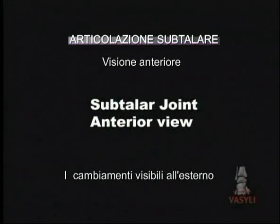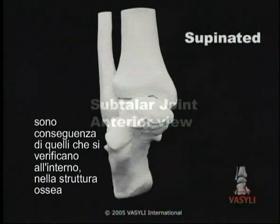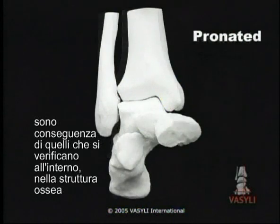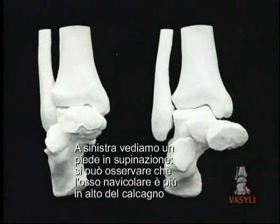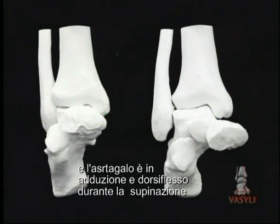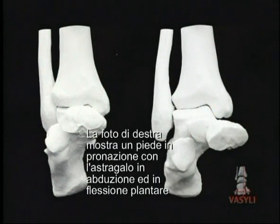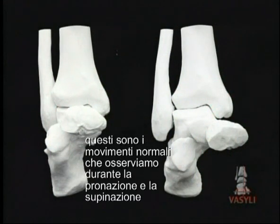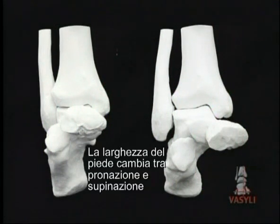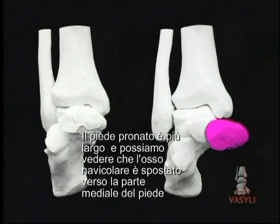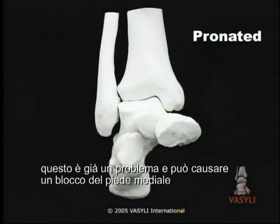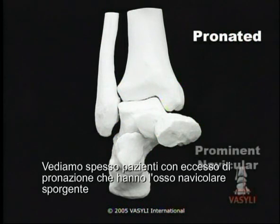Internal changes. The changes that are visible externally occur as a result of changes to the internal bony architecture. On the left is a supinated foot — the navicular on the medial aspect of the foot is higher than the calcaneus, and the talus is adducting and dorsiflexing with supination. The photo on the right shows a pronated foot with the talus abducting and plantarflexing. These are the normal motions that occur with pronation and supination. The width of the foot changes between supination and pronation. The pronated foot is wider and the navicular lies more medial than normal. This can cause the bulge in the medial aspect of footwear often seen in patients with an excessively pronated foot — known as a prominent navicular.